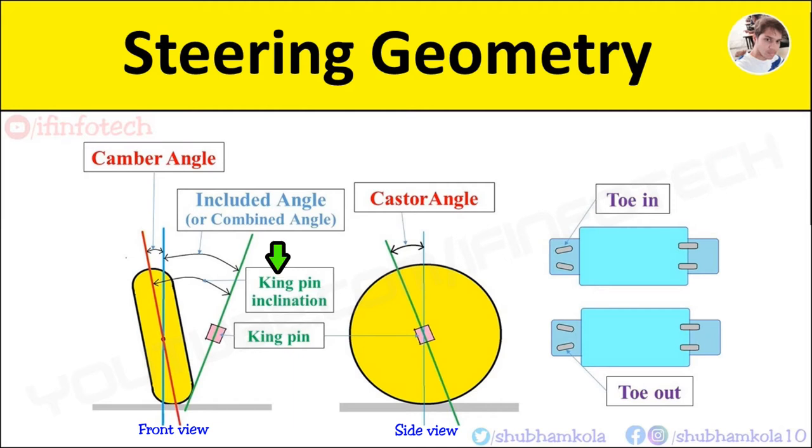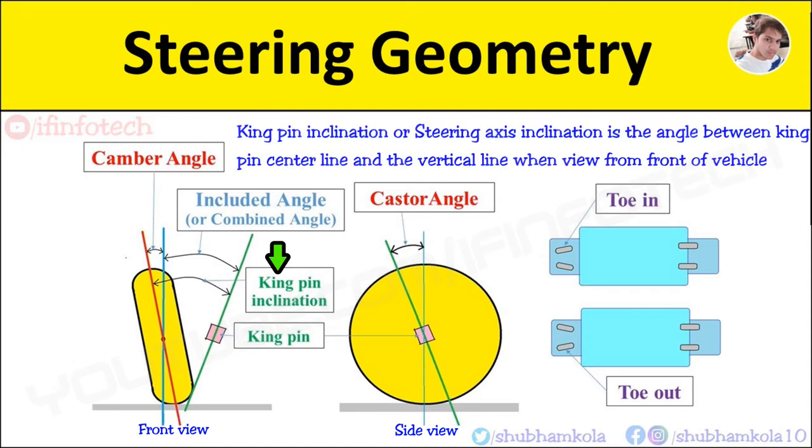So next is kingpin inclination, or also called as steering axis inclination. It is angle between kingpin center line and vertical line viewed from front of vehicle. The kingpin inclination is kept about 7 degrees to 8 degrees.